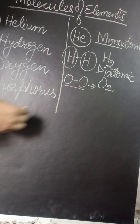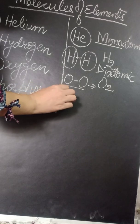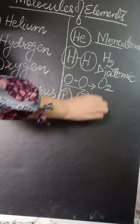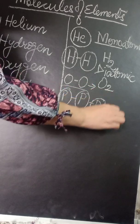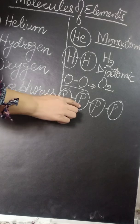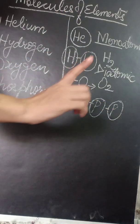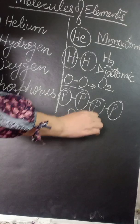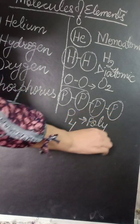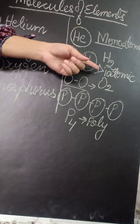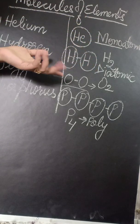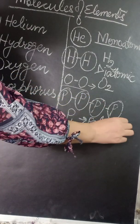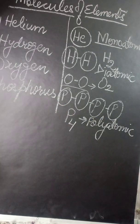The last one given here is phosphorus. Here phosphorus combines with four different atoms of phosphorus element. So four atoms will combine and form one molecule of phosphorus and we call it polyatomic. When you cross number 3: 1 is monoatomic, 2 is diatomic, 3 is triatomic, 4 is polyatomic. Poly means many. So this is a polyatomic molecule.